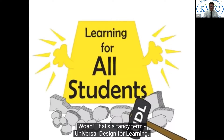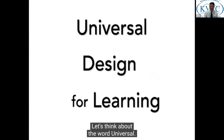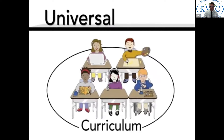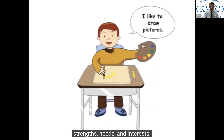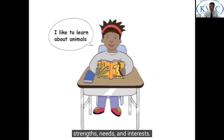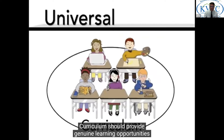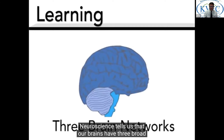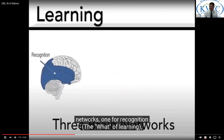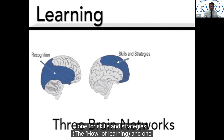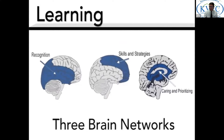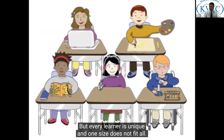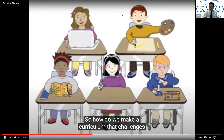Let's unpack the term 'universal design for learning.' By universal, we mean curriculum that can be used and understood by everyone — each learner in the classroom brings their own background, strengths, needs, and interests, and curriculum should provide genuine learning opportunities for each and every student. Learning is not one thing: neuroscience tells us that our brains have three broad networks — one for recognition (the what of learning), one for skills and strategies (the how of learning), and one for caring and prioritizing (the why of learning).